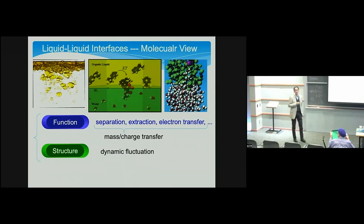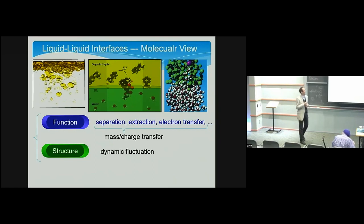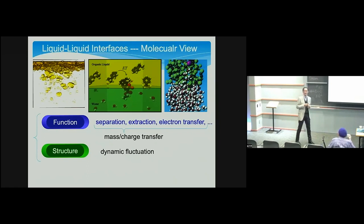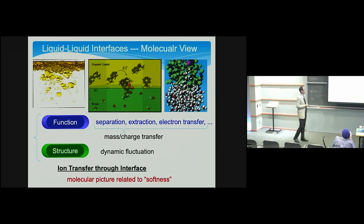In terms of structure, a liquid-liquid interface is characterized by very dynamic fluctuations. As a molecular scientist, characterizing the surface structure itself is a challenge. Today I will discuss ion transfer through interfaces and how we can understand the ion transfer mechanisms to obtain a molecular picture related to the softness of the interface.